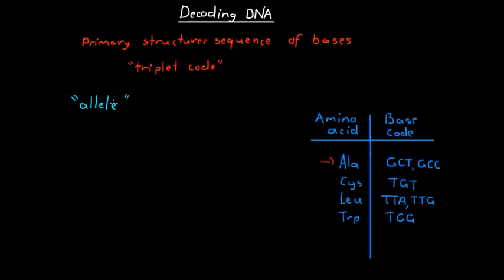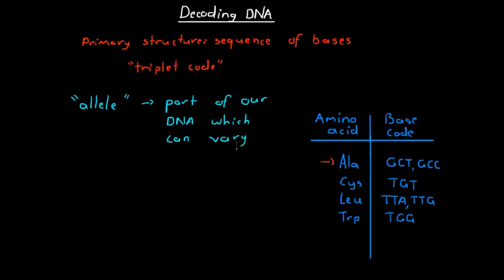An allele is basically a specific part of our DNA which can vary from person to person. The allele in our DNA molecules is the part that may give one person brown eyes while giving another person blue eyes. These alleles represent individual characteristics that are not the same for everybody, and these allele portions of our DNA molecules therefore differ from person to person.